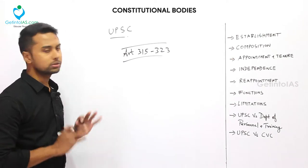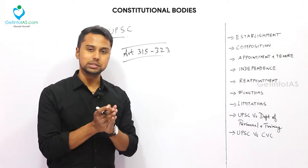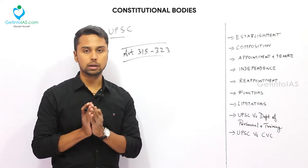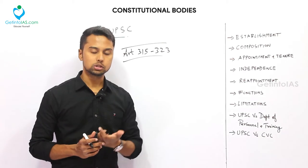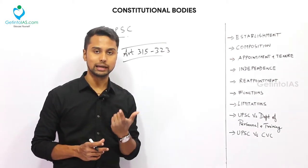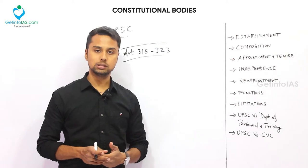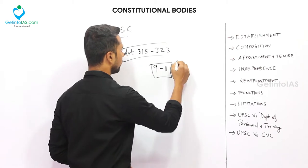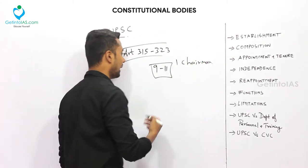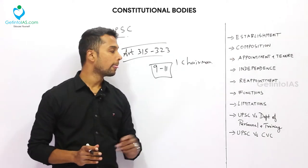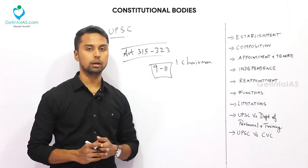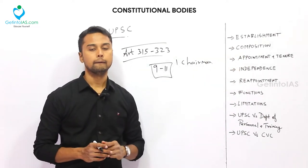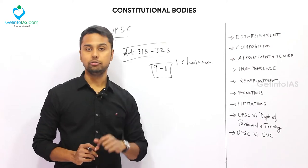About the composition: UPSC consists of one Chairman and other members, so it is a multi-member body. The limit of other members is determined by the President from time to time — usually there are 9 to 11 members. Both the Chairman and these members are appointed by the President. That is an important point about appointment.